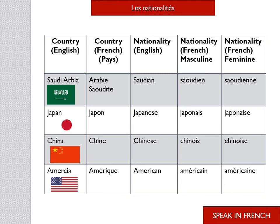Next is Japan — in French, we say Japon. The nationality in English is Japanese. In French, the masculine nationality is japonais, and the feminine nationality is japonaise. Next is China — in French, we say Chine. The nationality is Chinese. In French, the masculine nationality is chinois, and the feminine nationality is chinoise.